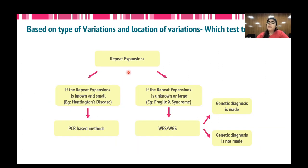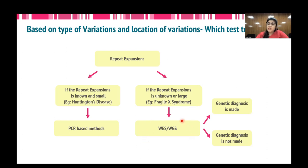Repeat expansions are one of the trickiest genetic defects for diagnosis. If the repeat expansion is known and small in length — for example, in Huntington's disease — PCR-based methods can accurately tell the number of repeats. But if the repeat expansions are unknown and large — for example, in fragile X syndrome — one can directly go for WES and WGS-based approaches. A caution here: even with NGS-based approaches, newer computational tools are still coming up that can accurately define and tell the number of repeats involved in these kinds of disorders.